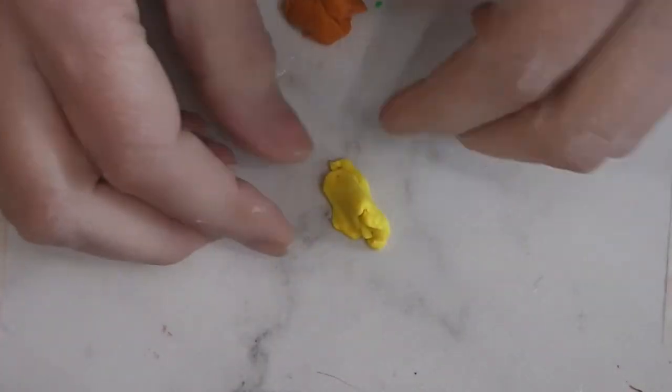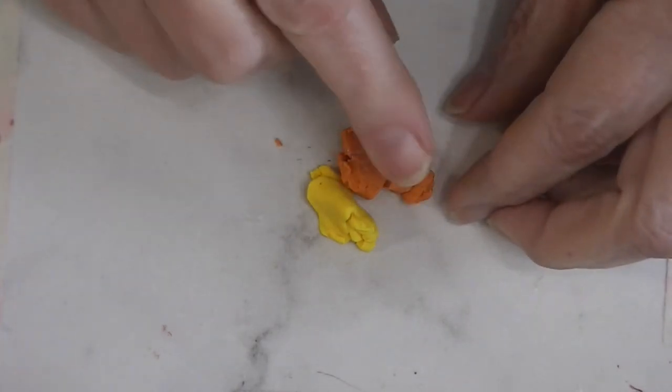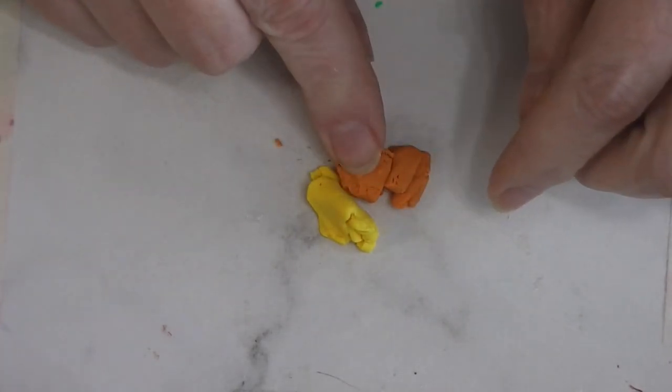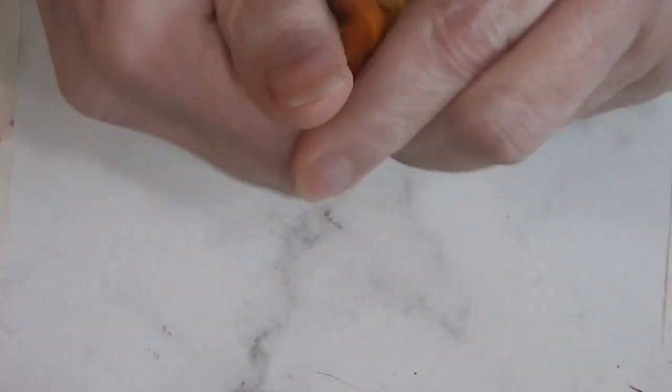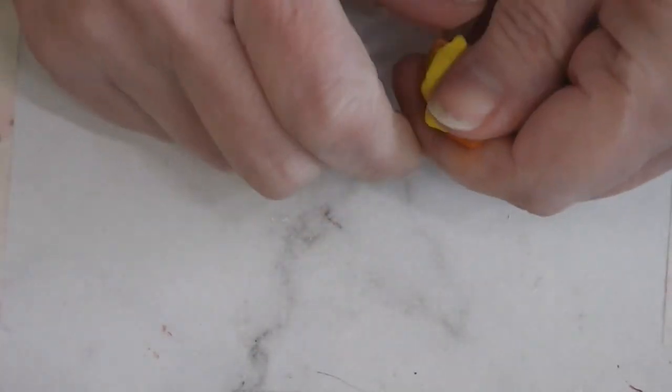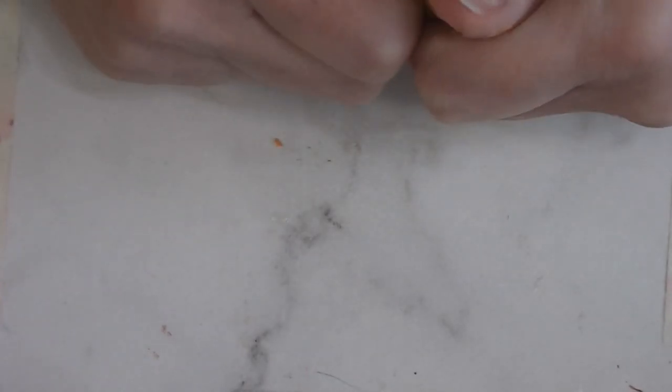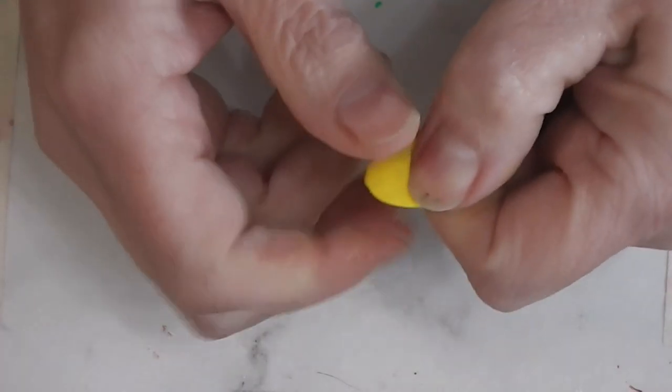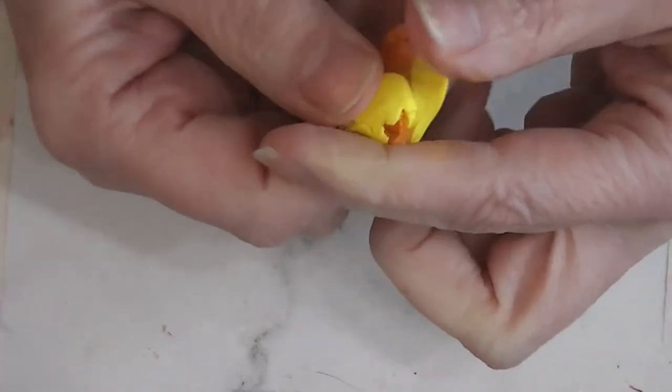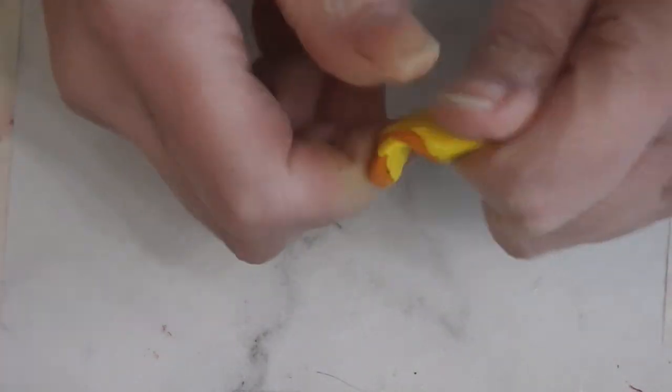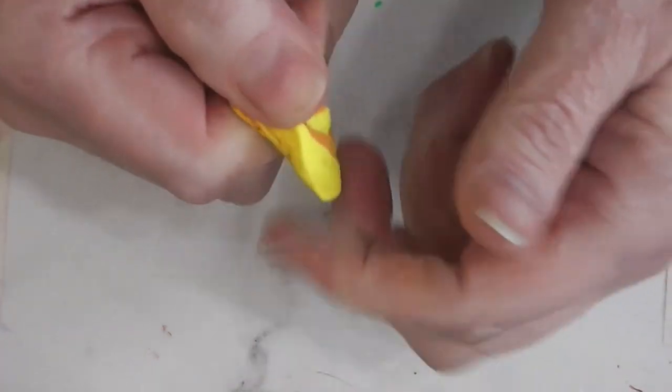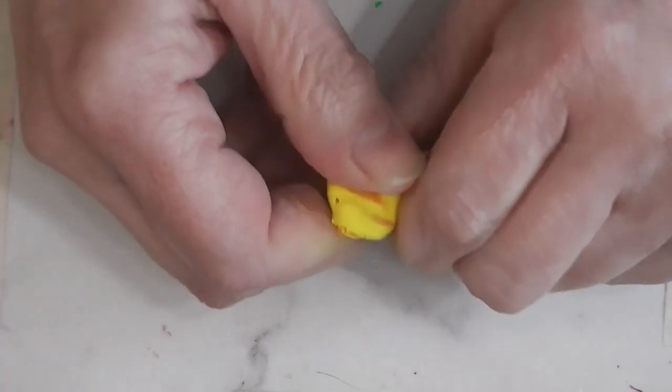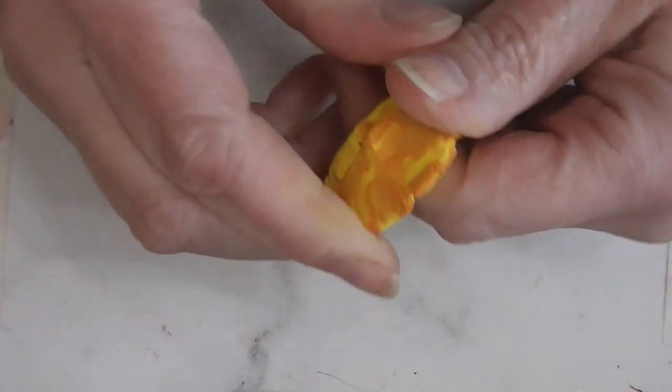So we're going to start with Sculpey 3 in Sweet Potato and this is a random yellow clay that was in my stash. There was no label anymore or anything. I'm trying my best to get some of those old clays used up that have been hanging. Some of them literally have been in my stash for decades at this point. Still good. I just need to get them used up before I buy any more.